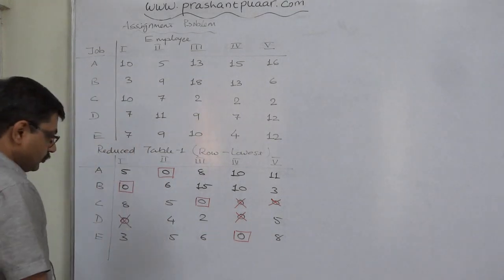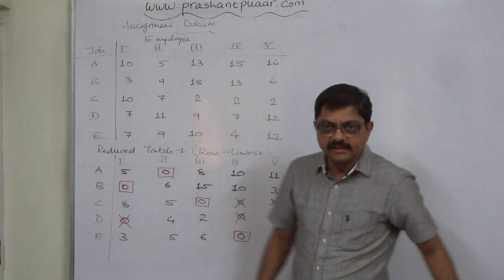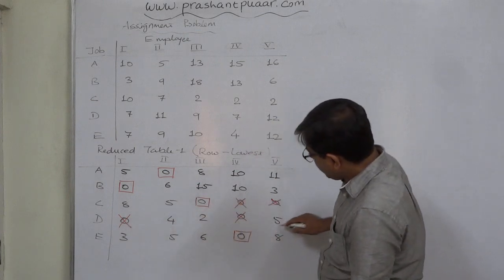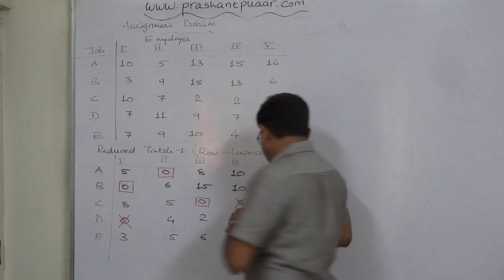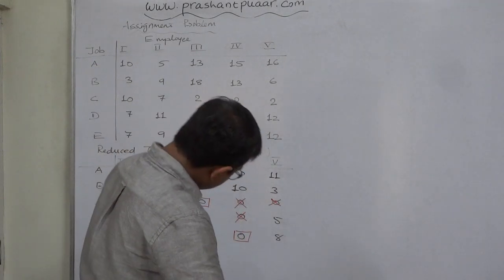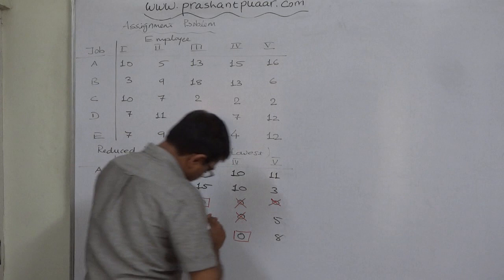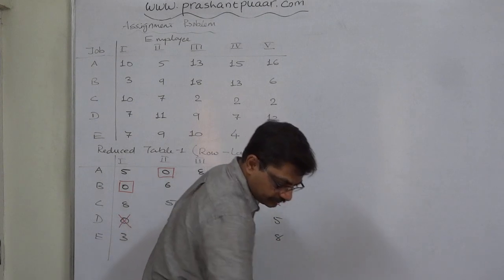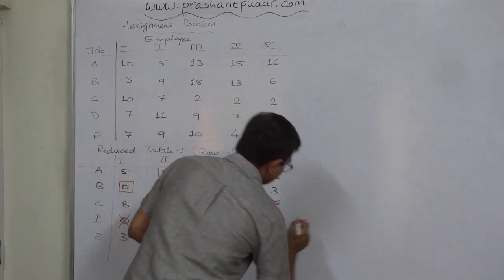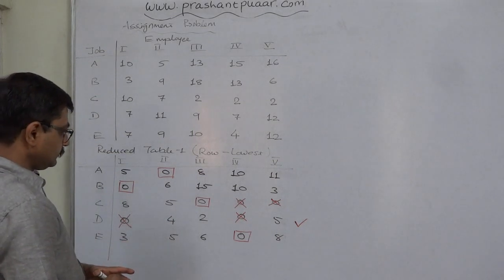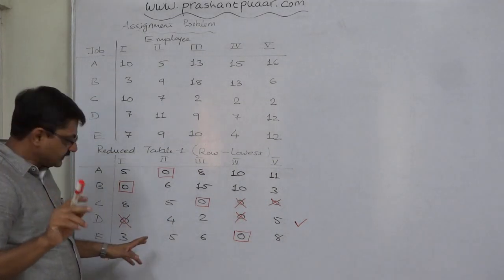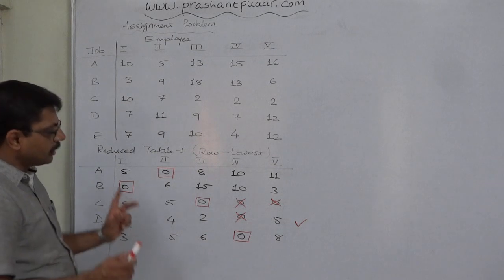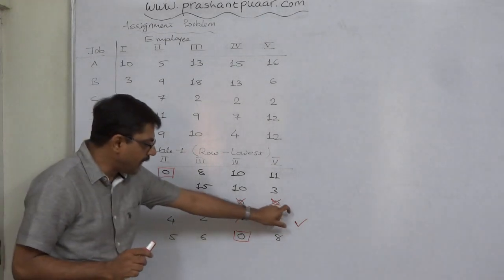A unique technique is used for finding the optimal solution. First, find the row without any assignment and make a tick mark on it.